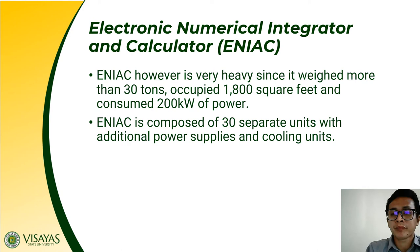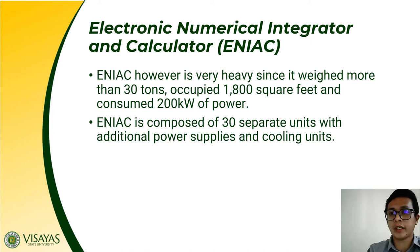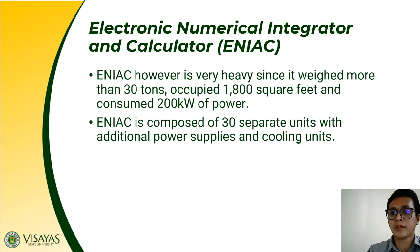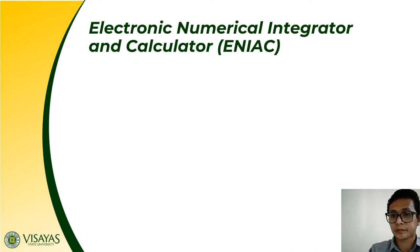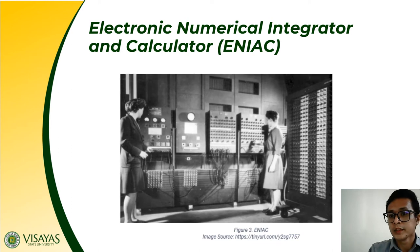ENIAC was composed of 30 separate units with additional power supplies and cooling units. Since vacuum tubes really dissipate more heat, it needed cooling units to prevent the computer from overheating. It consumed large amounts of electricity — imagine having 200 kilowatts of power — it really consumed a lot of electricity.